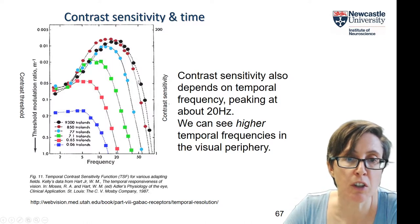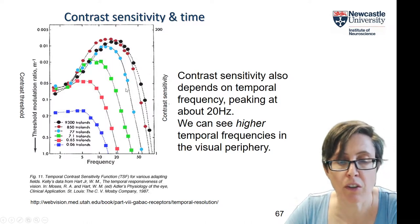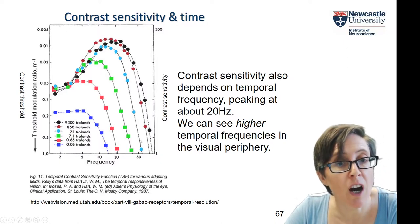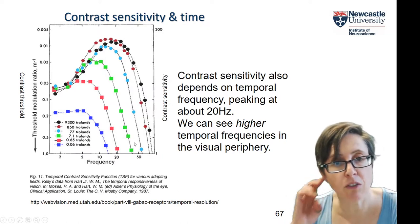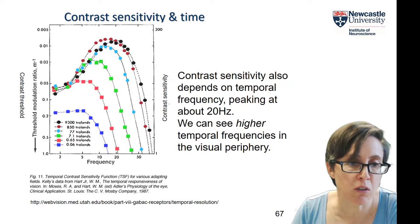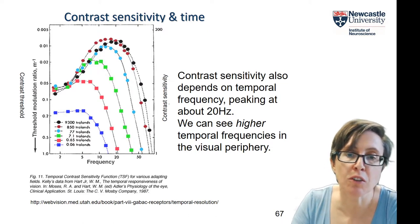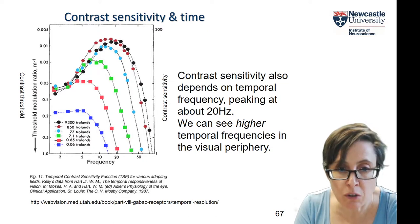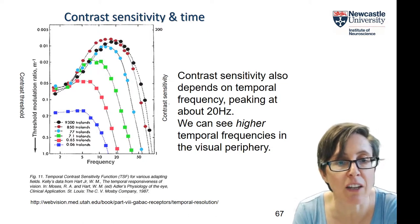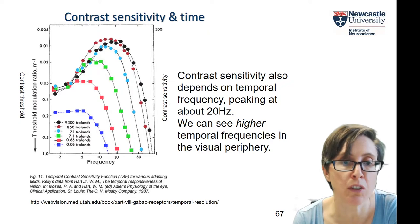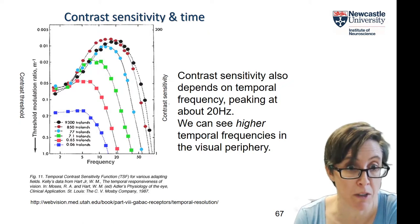As you reduce the luminance, your contrast sensitivity drops overall but especially at the higher temporal frequencies. That's because your visual system is trying to make the most of the available light — it integrates over longer periods of time in order to capture as much light as possible, but at the cost of losing sensitivity to rapid changes.